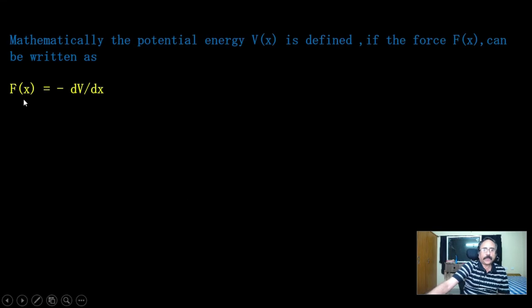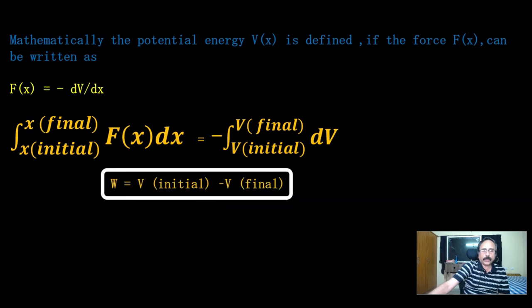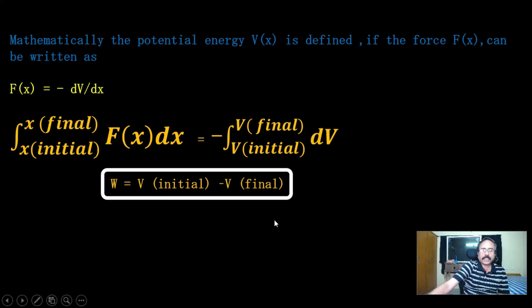Let us define potential energy mathematically. Force as a function of x: F(x) = −dV/dx. Integrating this equation to get work done: the integral of F(x)dx from x_initial to x_final equals −(integral of dV from V_initial to V_final). The left-hand side is the work done. Therefore, work done = V_initial − V_final. This shows that work done is independent of the path — it depends only on the potential energy at the initial and final positions.